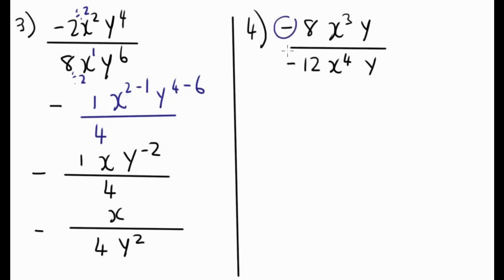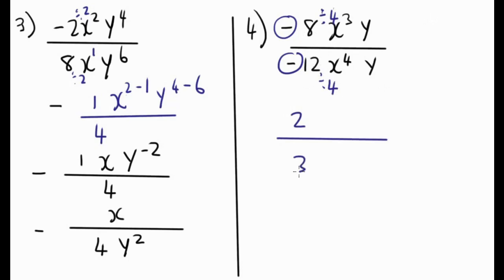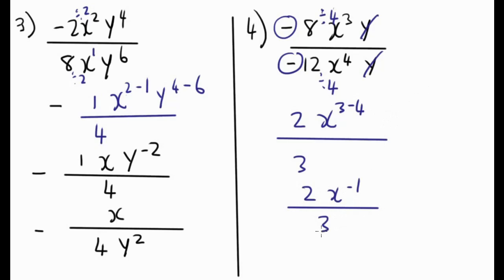For Question 4: negative divided by negative is positive, so no negative sign. Highest common factor of 8 and 12 is 4, giving 8 divided by 4 equals 2 and 12 divided by 4 equals 3. Variables: x to the power of 3 minus 4 gives x to the power of negative 1, and y cancels out to y to the power of zero which equals 1. Final answer: 2 over 3x.